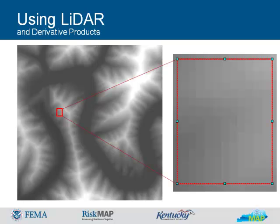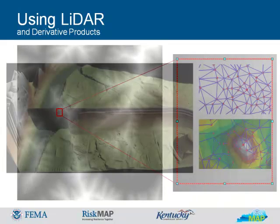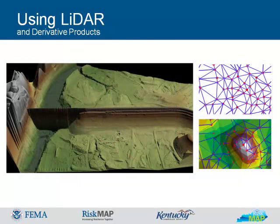DEM resolution is dependent on the grid's cell size. Smaller cell size will give you a higher resolution, but it will produce a larger file and require more processing power. Triangulated Irregular Networks (TINs) are widely used in various GIS and CAD software to model terrain surfaces. TINs are a form of vector-based digital geographic data constructed by triangulating a set of vertices or points. The vertices are connected with a series of edges to form a network of triangles.